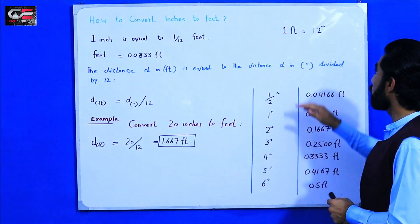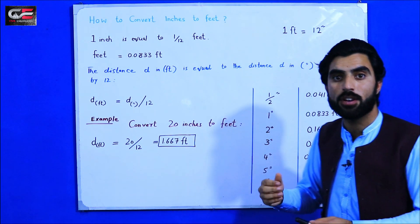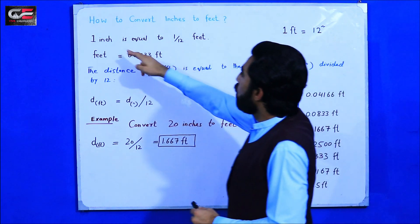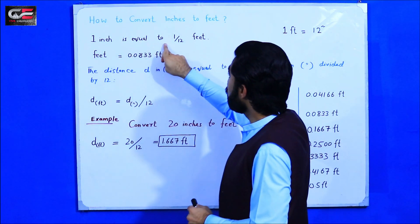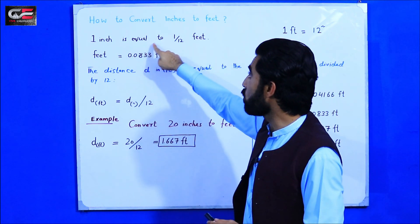First of all guys, I will tell you that one foot is equal to 12 inches. So in one foot we have 12 inches. Now guys, one inch is equal to 1/12 feet.